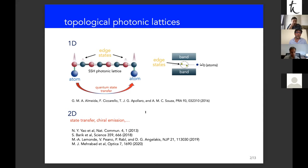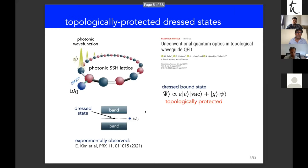It became natural to think about what happens when quantum emitters are coupled to a photonic lattice with topological properties. One natural idea is coupling atoms to edge states, for instance of the SSH photonic lattice, and using these edge states as an effective bus to transfer quantum states between atoms, in 1D or 2D. There are works showing effects such as chiral emission when coupling a quantum emitter to a topological photonic lattice, and state transfer mediated by topologically protected edge modes.